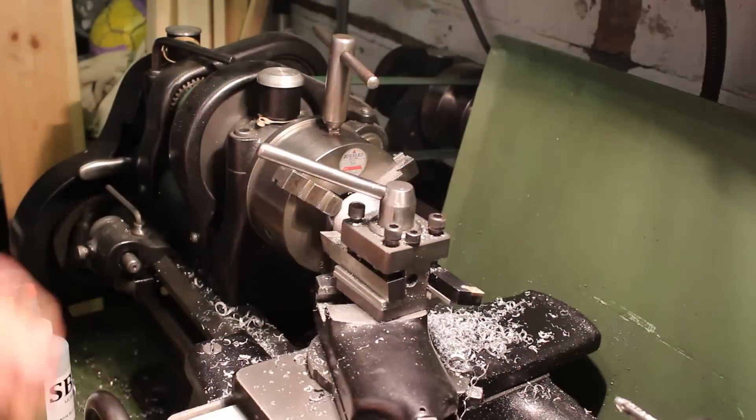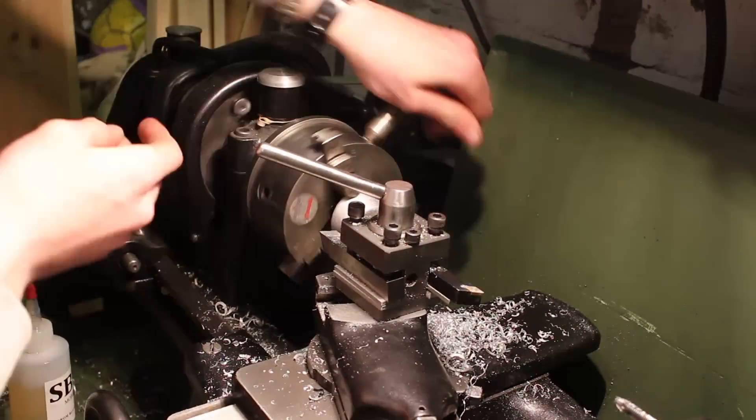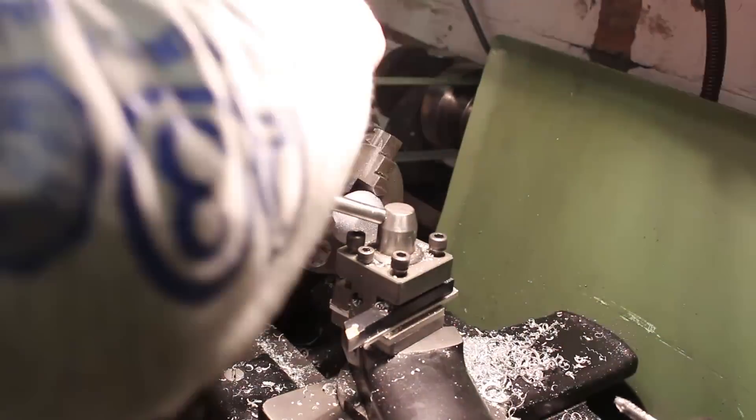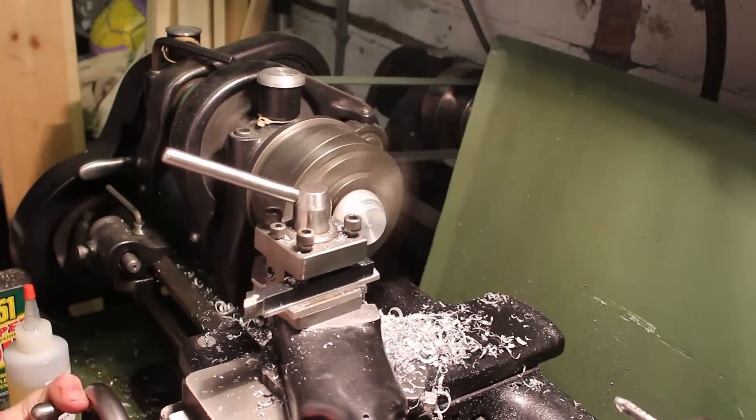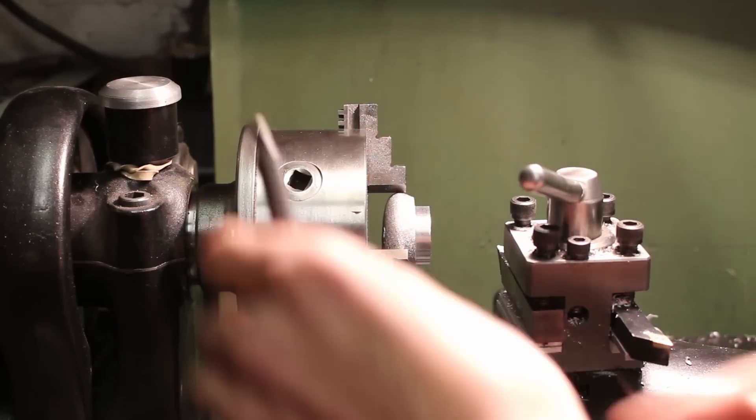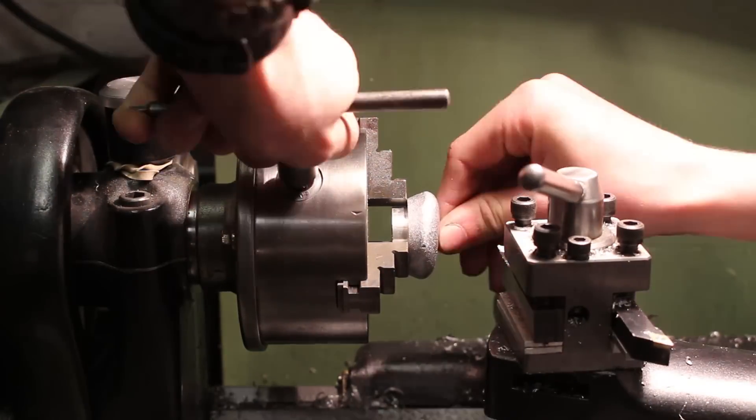Taking some ingots that I cast in a previous video I start to turn them down, and these are going to be leveling feet so that the forge doesn't rock about because at the moment the feet aren't quite level. I faced one side and created a shoulder and then I could flip it round, seat it in the three-jaw chuck, and face the other and make sure that it's flat.